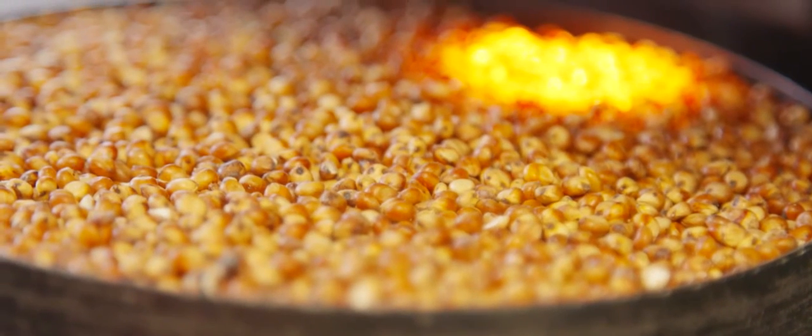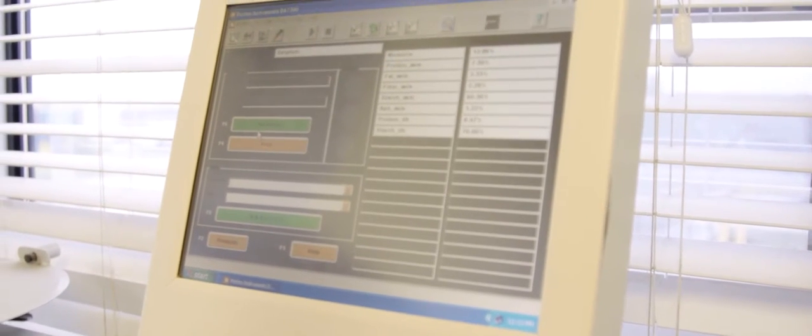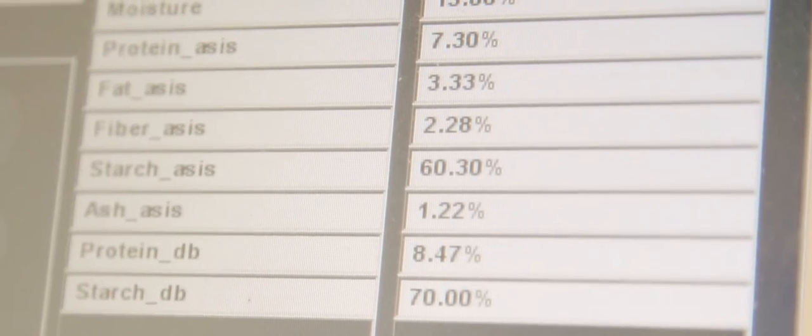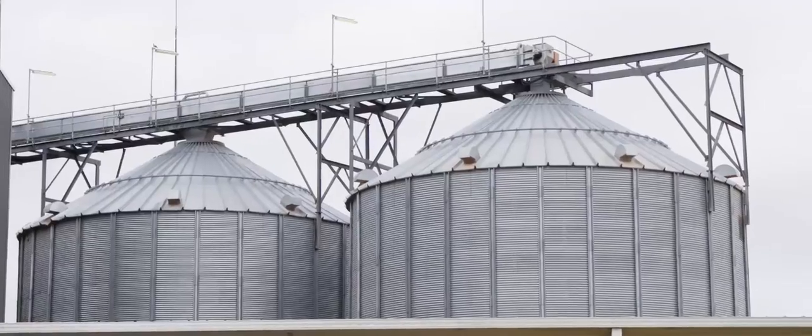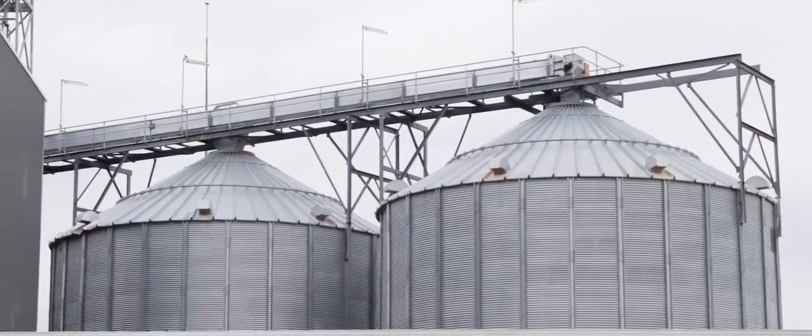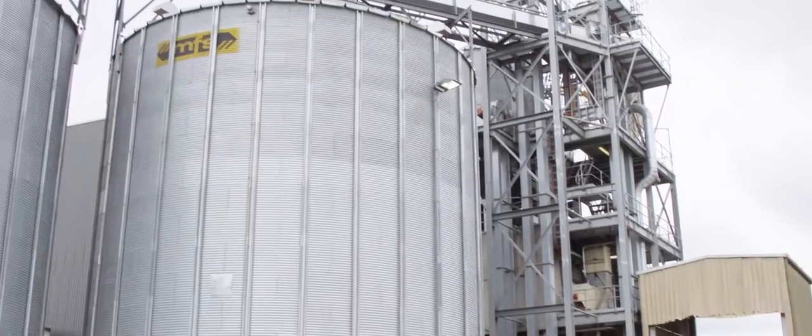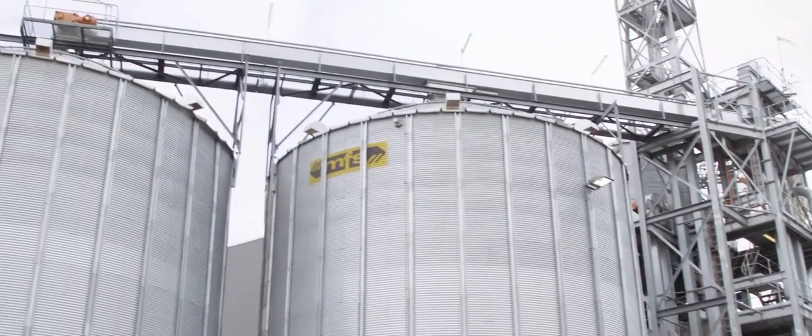Once we buy the sorghum, the first thing we do is run it through to test the quality standard of our sorghum, because it's very interesting to know how much starch you're getting out from the sorghum. Once we finish this test, that goes into the silo. There are a couple of silos here and each silo is holding 1,200 tons.